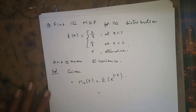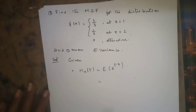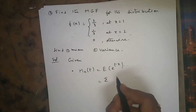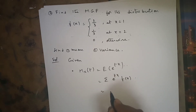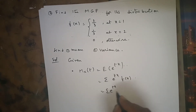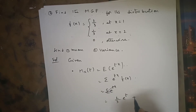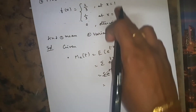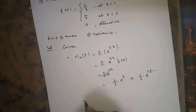The next problem: find the MGF for the distribution where f(x) = 2/3 at x = 1, and f(x) = 1/3 at x = 2. Find the mean and variance. This is also a discrete random variable. M_x(t) = E[e^(tx)] = sigma e^(tx) * f(x). Substituting: when x = 1, f(x) = 2/3; when x = 2, f(x) = 1/3. So M_x(t) = (2/3)e^t + (1/3)e^(2t).